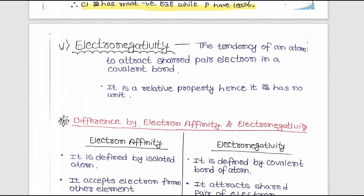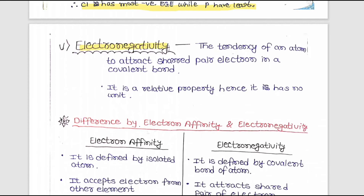Now let us come to electronegativity. Electronegativity is the tendency of an atom to attract the shared pair of electrons in a covalent bond. It is a relative property and hence has no unit.